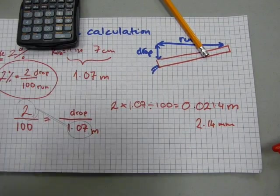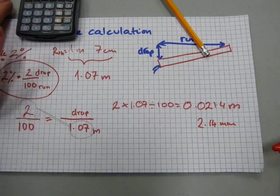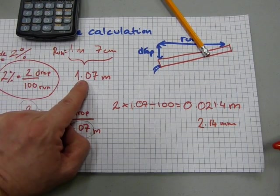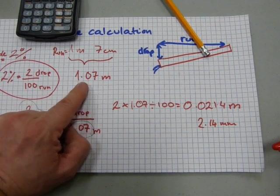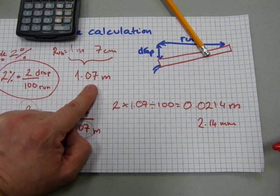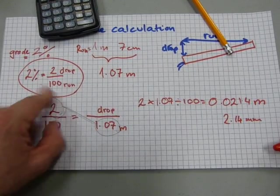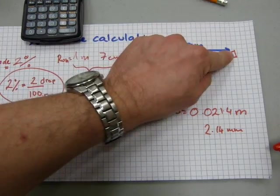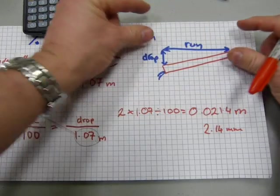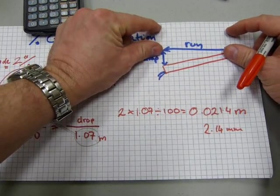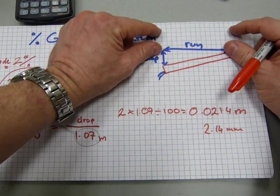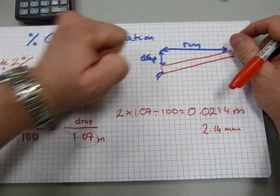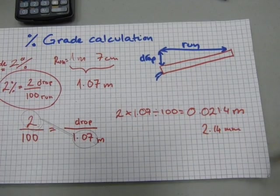0.0214 meters is 2.14 millimeters. Now that's not a whole lot of drop, but if you have a length of 1 meter and 7 centimeters, to have a 2% drop, you need to put your bubble level on a pipe somewhere. Over a meter, the pipe should drop 2.14 millimeters.